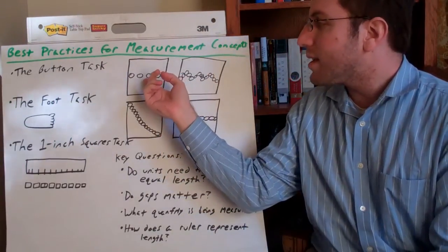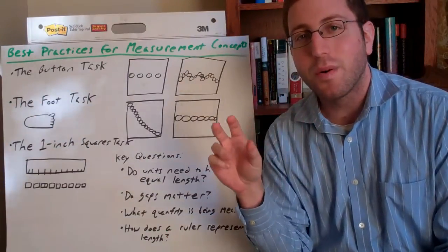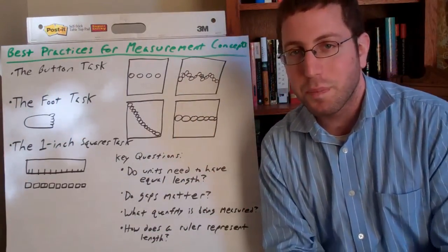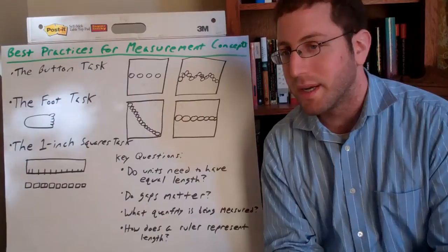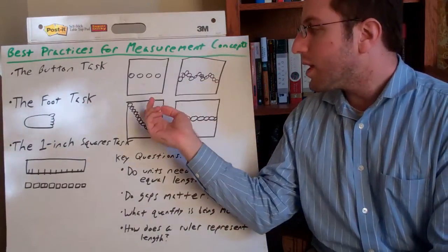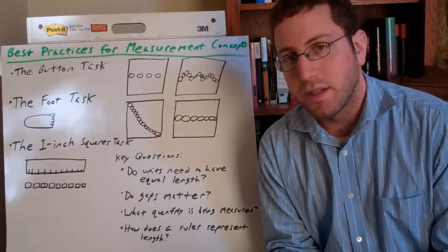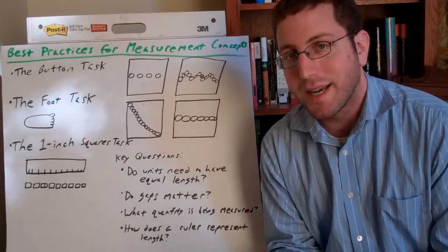So in one case they should have had spaced out the buttons they were using. And so, you know, these big gaps in between each button. In another one here they measured it diagonally with buttons, trying to find the length. Obviously that's not going to work.